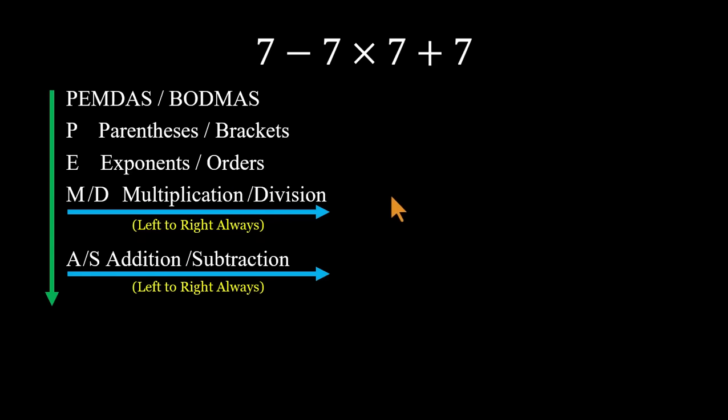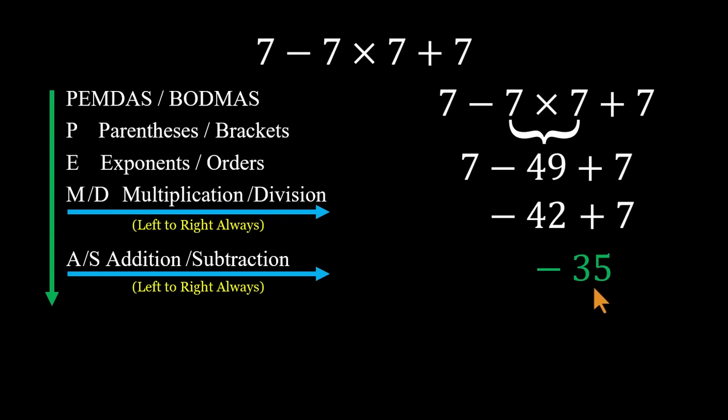Now let's solve it properly. In the expression 7 minus 7 times 7 plus 7, no parentheses, no exponents. So we start with multiplication. 7 times 7 equals 49. Now the problem becomes 7 minus 49 plus 7. Subtraction and addition are equal in rank, so we go left to right. 7 minus 49 equals negative 42. Then negative 42 plus 7 equals negative 35. And that's the correct answer. Negative 35.